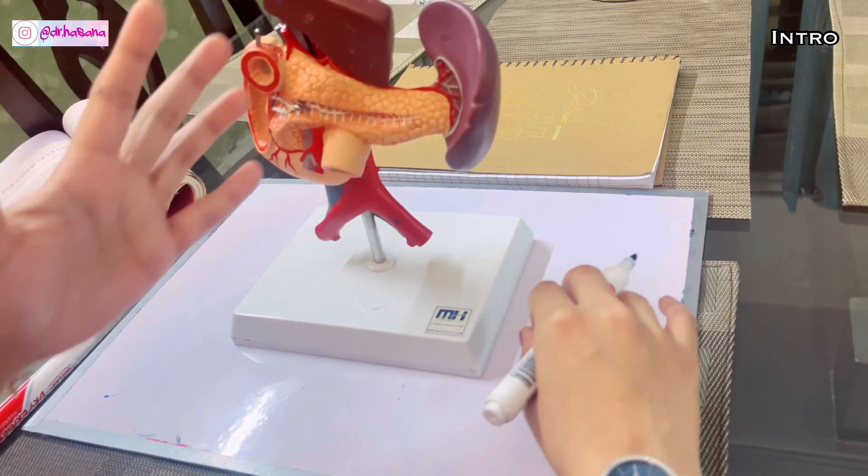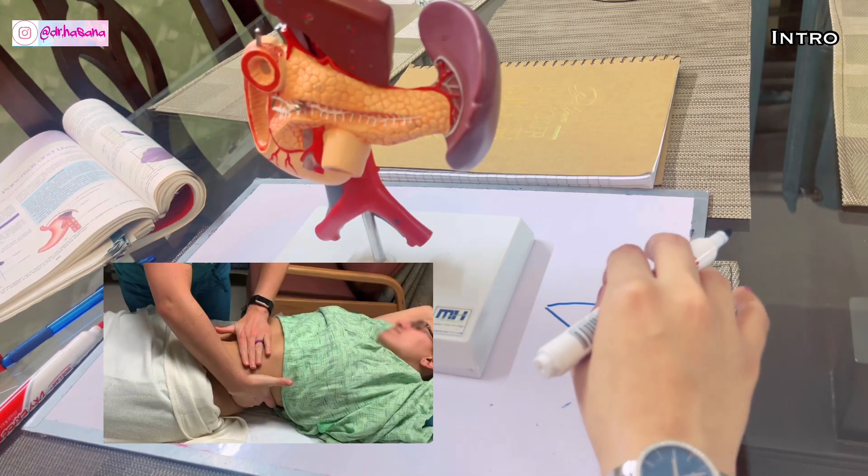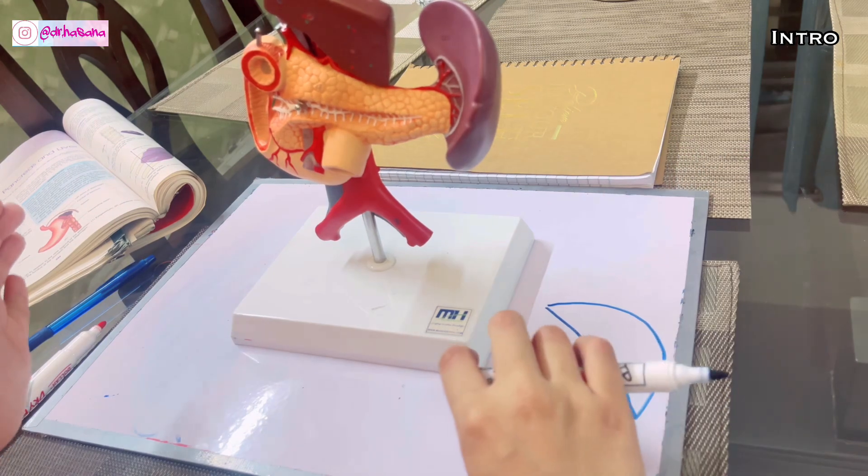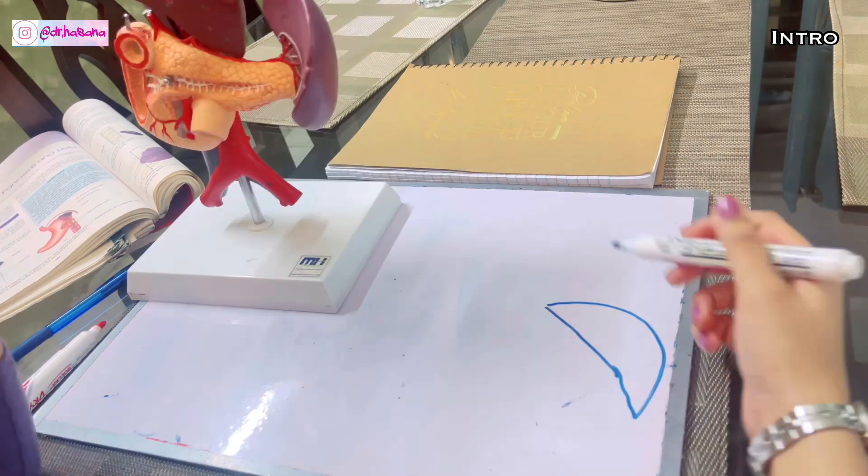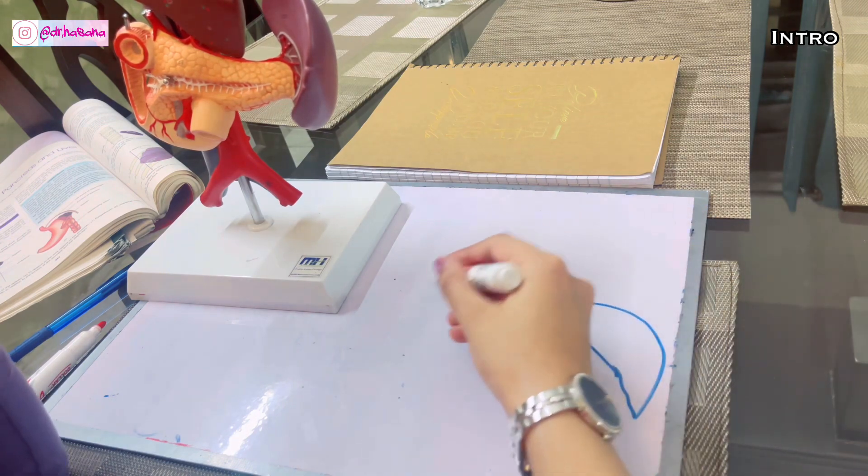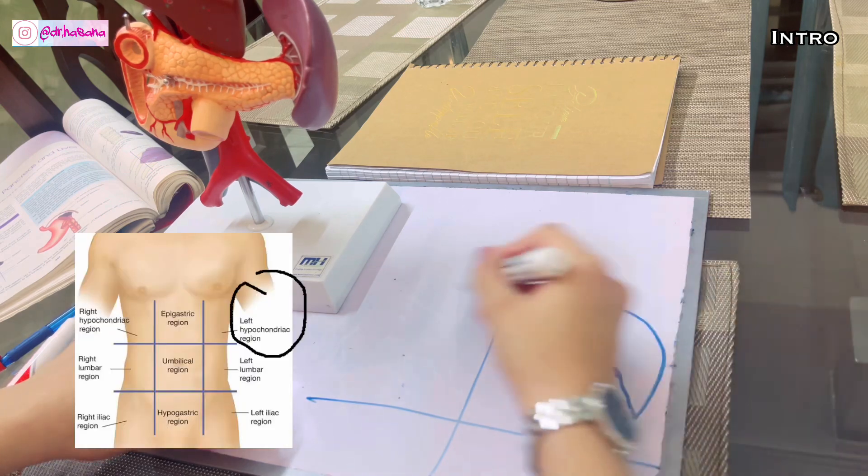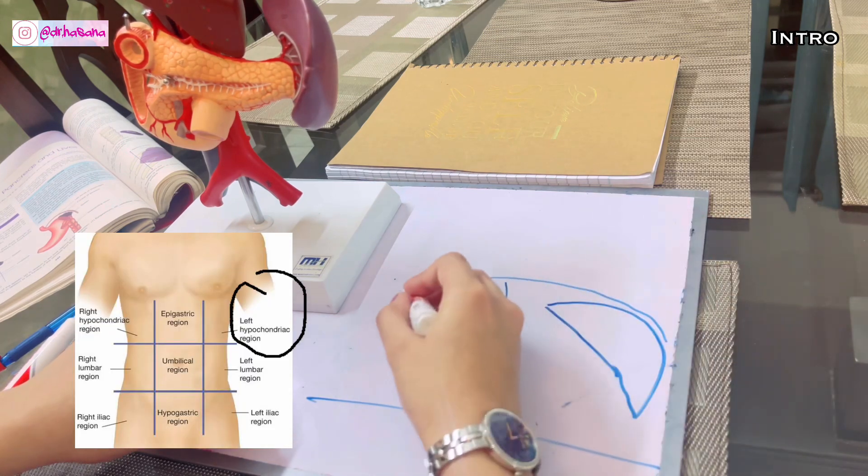Your spleen is this wedge-shaped organ that is kept directed laterally. Place your hand at the back of your ribs, right on the anterolateral side of your thorax, directed downwards and laterally.